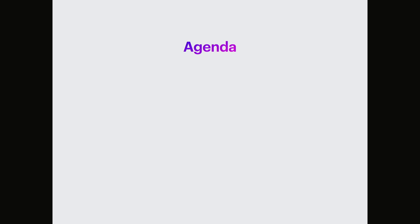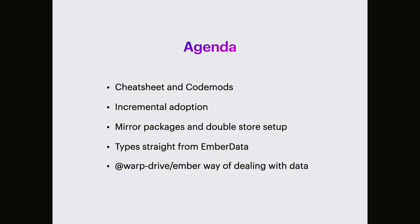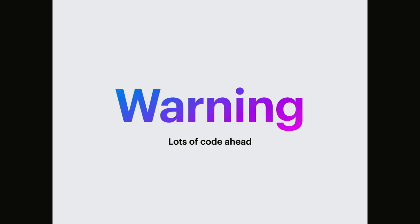Let's see what we have today. We prepared cheat sheets and code mods. We have the incremental adoption strategy. We have mirror packages and double store setup. Types straight from Ember data, and a little bit about Warp Drive Ember — the way of dealing with data. A little disclaimer: there will be a lot of code in the slides today. Some examples are written in TypeScript, some are just JavaScript, just to save some space. Hope it will not scare you. Let's go.